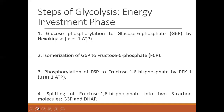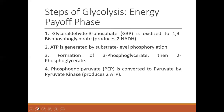After this, fructose-1,6-bisphosphate is split into two three-carbon molecules. The first three-carbon molecule is glyceraldehyde-3-phosphate, and the second is dihydroxyacetone phosphate. Both can isomerize to either glyceraldehyde-3-phosphate or dihydroxyacetone phosphate.